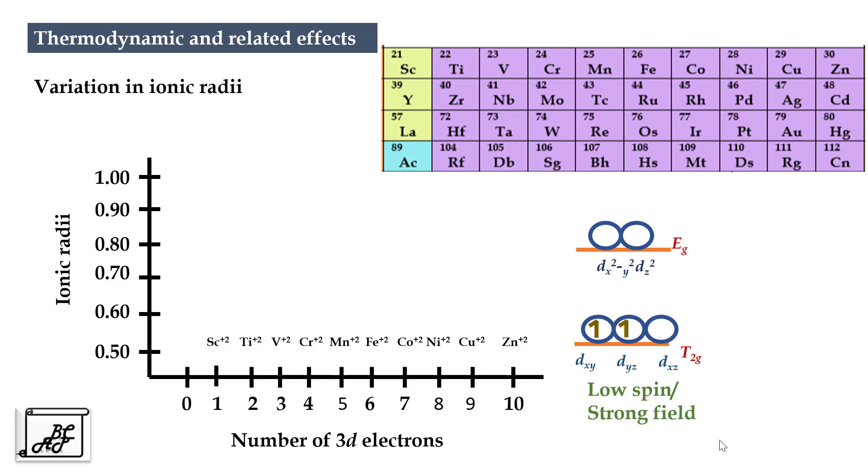In case of strong ligand field, the first six electrons get occupied into the lower lying T2g orbital. The effect of this is the ionic radii goes on decreasing from scandium to iron. Once all the T2g orbitals are occupied, the next four electrons go into the Eg orbital. These Eg orbitals are along the axis and face the ligands directly. Due to this repulsion, the ionic radii goes on increasing from iron to zinc. This is the variation of ionic radii in low spin complexes.